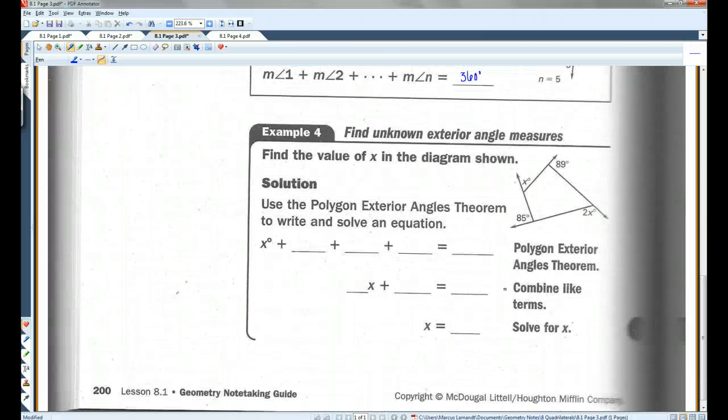Okay, so for example, find the value of x in the diagram shown. These are all exterior angles. So if I add them all together, I'm going to get 360. So x degrees plus 89 degrees plus 2x plus 85. You could put degrees or you don't really have to. All of this will add up to 360. Let's combine like terms. x plus 2x gives me 3x. 89 plus 85. 174.